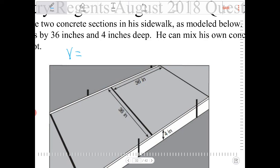So to find the volume of a rectangular prism, we multiply the area of the base, which in this case is 36 squared, times the height, which is 4. And we're going to be doubling this because there are two of them.